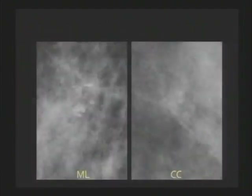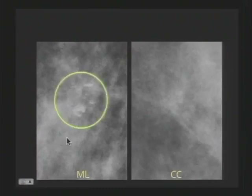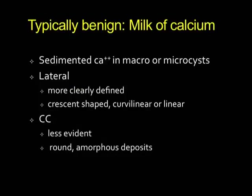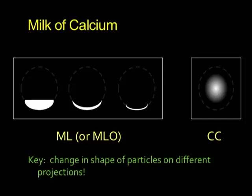This last category deserves attention — milk of calcium. On the lateral view, we see meniscoid linear calcifications. On the CC view, we see almost nothing — some amorphous, cloudy calcifications very difficult to see. The key to milk of calcium is knowing these are dependent calcifications in macro or microcysts, and that they look different on different views. On the lateral you'll see crescentic or curvilinear calcifications; on the CC you'll see round amorphous deposits. Only if they change shape are they milk of calcium — if you see linear calcifications on your CC, they are not milk of calcium.